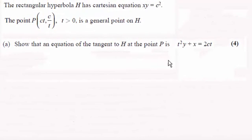Hi there. Now for this question we've got to show that the equation of the tangent to this hyperbola H given by xy equals c squared at this point P has the equation t squared y plus x equals 2ct.